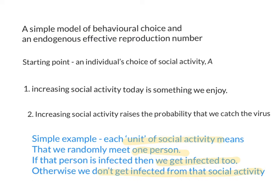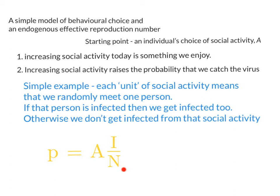This simple example can be captured by a little bit of maths. I is the number of infected people in the population — the people that can pass the virus on. N is the total population size. So the probability P that you become infected this period will depend on the amount of social interaction you do. Every time you undertake a unit of social activity, you bump into one person. The probability that that person is infected is simply I divided by N. So the probability that you become infected is (I/N) times the amount of social activity you engage in.